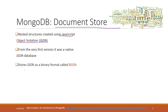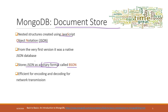Later on, MongoDB started storing JSON in a binary format, which they call BSON. They are still using the JSON format — the structure is still JSON — but stored in binary format so that we can save space. BSON is very efficient for encoding and decoding for network transmissions.